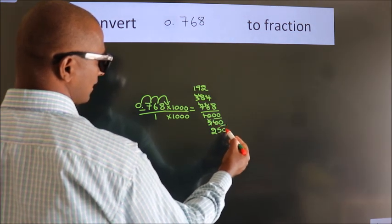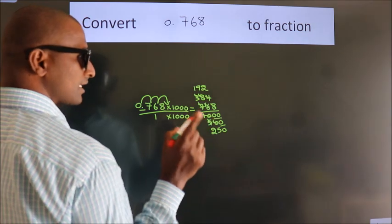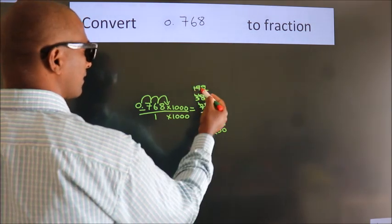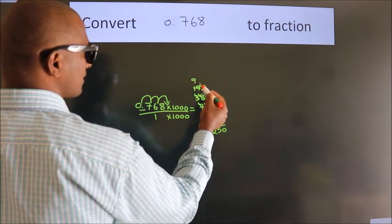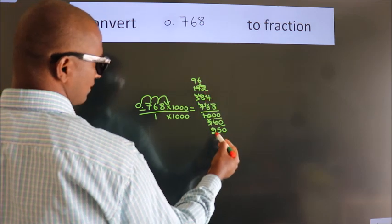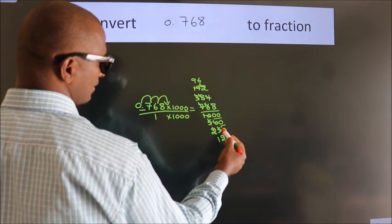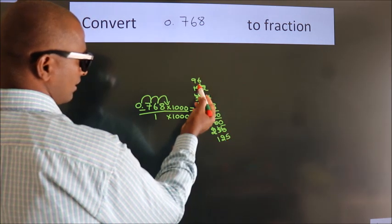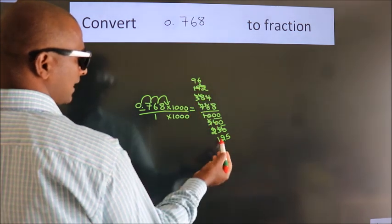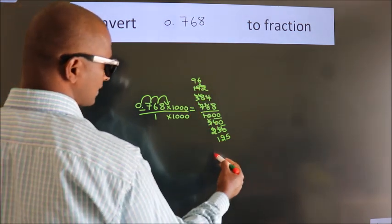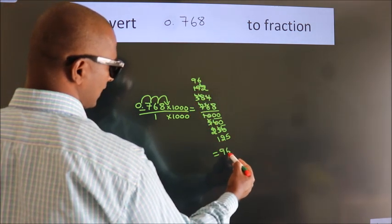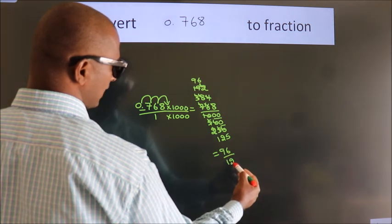I cancel with 2 again. 2 nines, 2 nines, 2 sixes, 2 ones, 2 twos, 2 fives. This further cannot be simplified. So our fraction is 96 by 125.